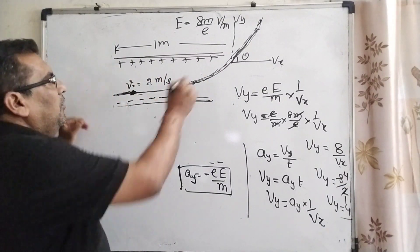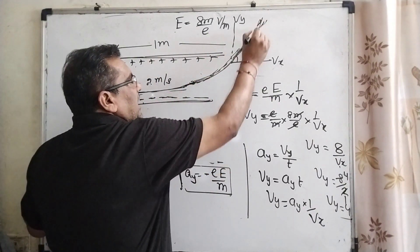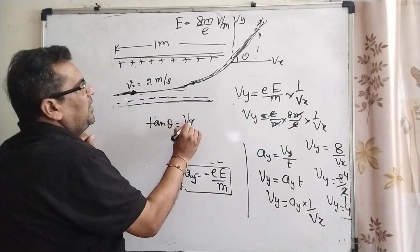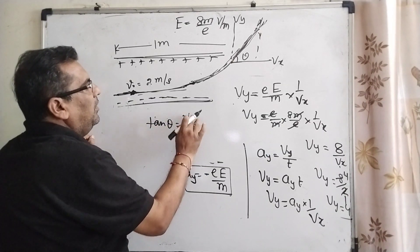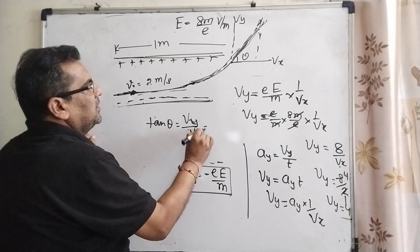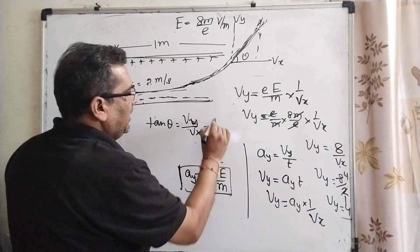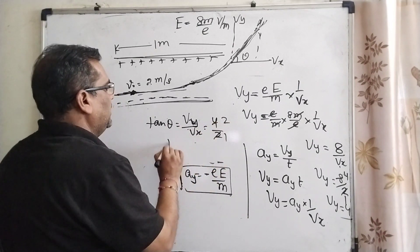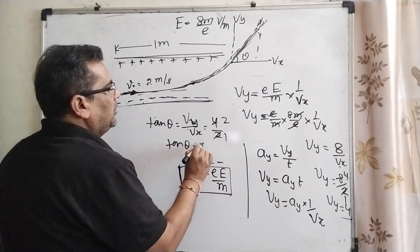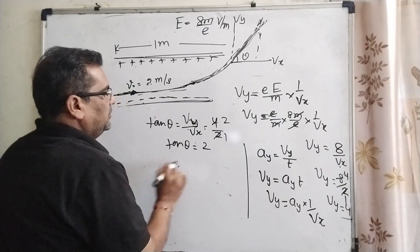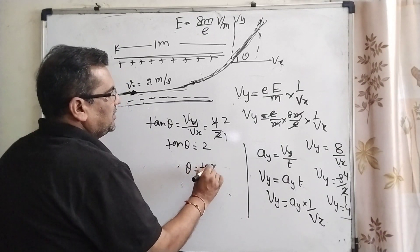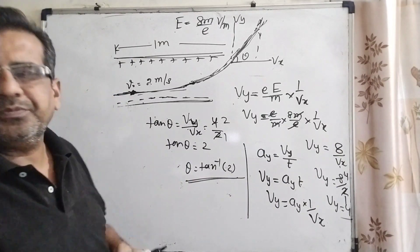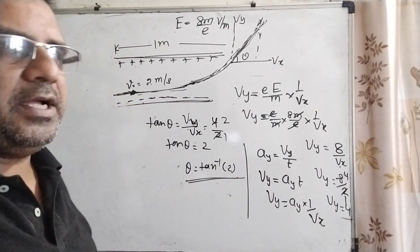Then you can see that tan(theta) equals Vy divided by Vx. Vy is 4 and Vx is 2, so tan(theta) equals 4/2 equals 2. Therefore theta equals tan⁻¹(2). So tan⁻¹(2) is the correct answer.